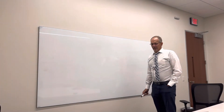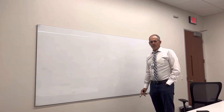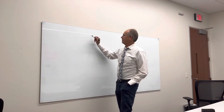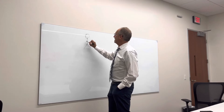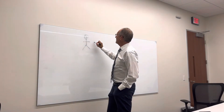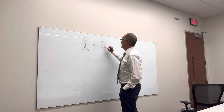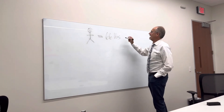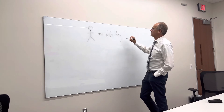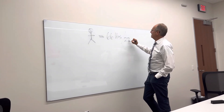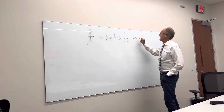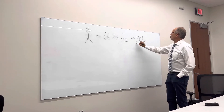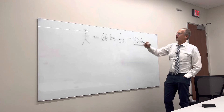Hi guys. I've been asked to do a calculation for maximum dose of local anesthetic for you. So let's run through a scenario. We have a child who weighs 66 pounds. The first thing we need to do is convert pounds to kilograms. We know there are 2.2 pounds per kilogram, so we divide by 2.2 and that gives us 30 kilograms. We'll do our calculation based upon a 30 kilogram child.